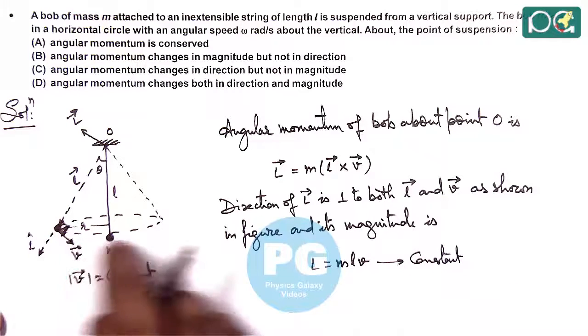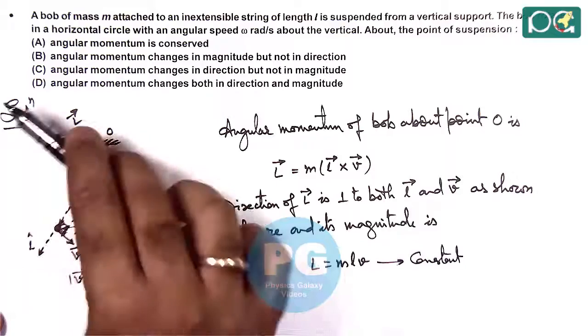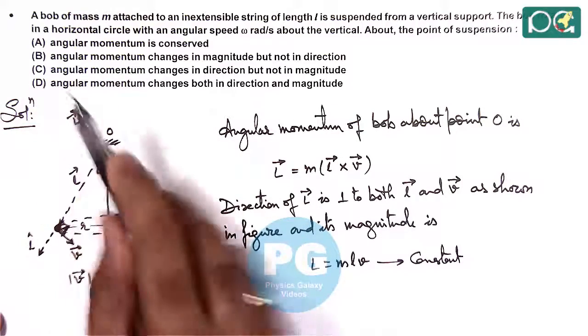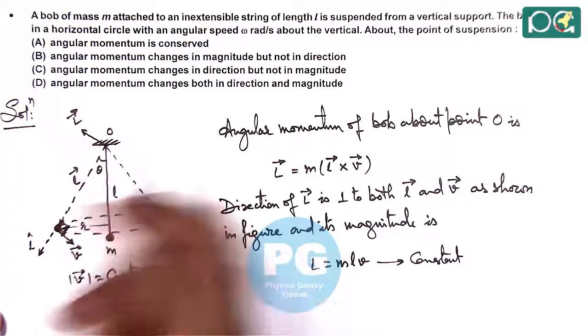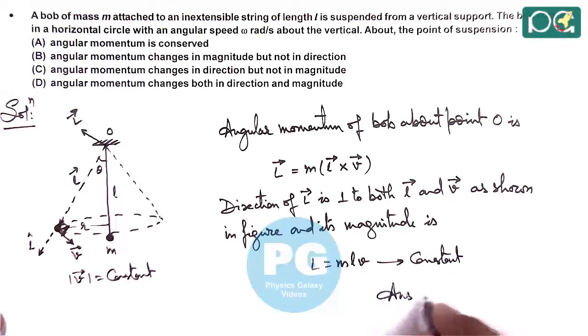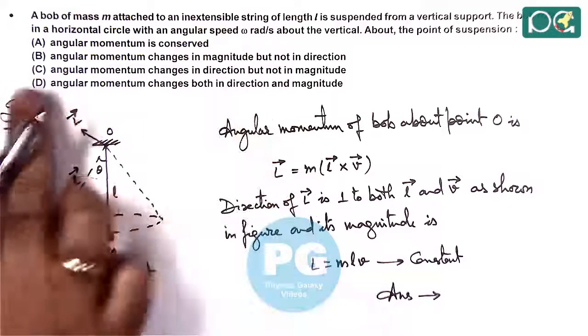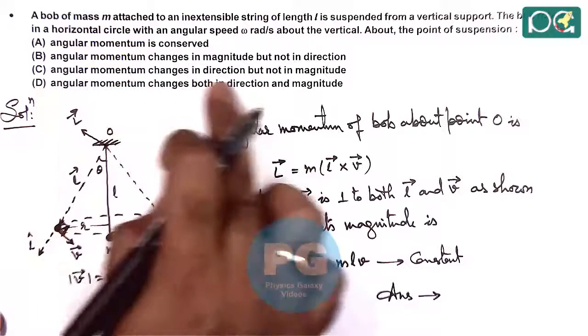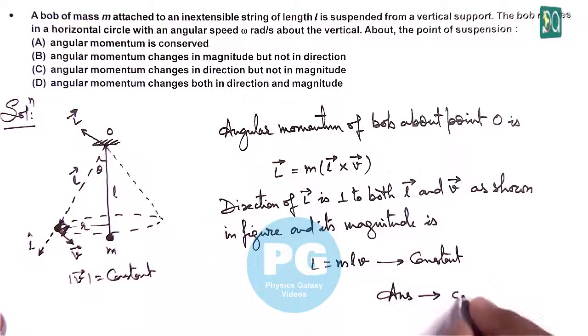But as it revolves in a circular motion, this L vector will rotate like this. So direction of L vector is changing but magnitude is constant. So here we can say the answer to this question is matching with option C, where it says angular momentum changes in direction but not in magnitude.